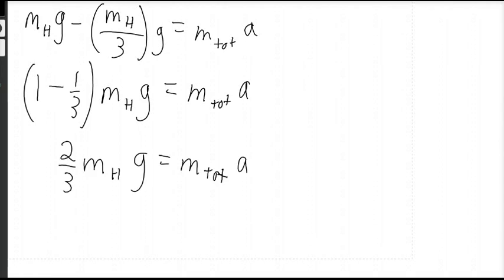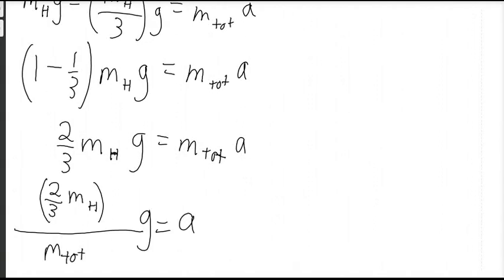Also, I'm demonstrating that, not surprisingly, this equation looks as if we just hung a lighter mass on the left end. You may remember in the first case that we had M H g equals M total times a. Here we have two thirds M H g equals the same right side. So dividing both sides by M total.